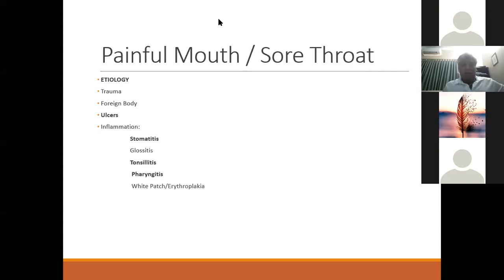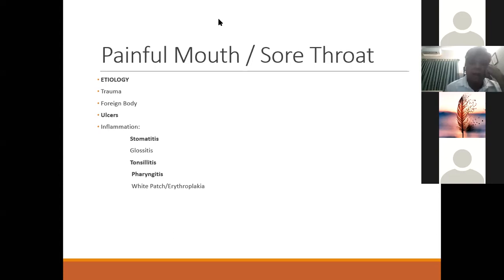Other inflammatory conditions include white or red patches. A white patch could be thrush, which is a fungal infection, leukoplakia, or erythroplakia. Leukoplakia and erythroplakia are pre-malignant conditions, which we will discuss in the next lecture. These are the common etiologies causing pain in the mouth or sore throat. Commonly we see tonsillitis or pharyngitis, and sometimes generalized inflammation of the mouth or ulcers.